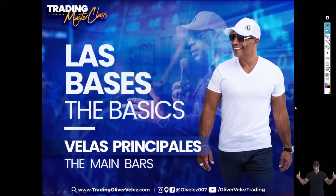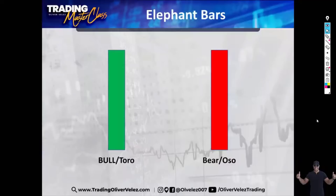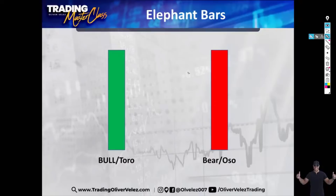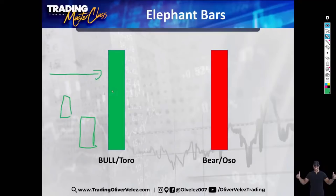All right, the basics. We're going to look at the main bars that I want my traders to be able to identify and play. The first type of bars is what I call elephant bars. Elephant bars are elongated bars that can be to the upside — a big, giant, fat green bar — or a big, giant, fat solid red bar to the downside. An elephant bar is significant because it is taller, fatter, and longer than most of the bars on a specific chart.